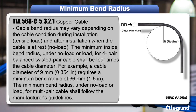Bend radius refers to the minimum radius that a cable can be allowed to bend without damaging the cable. All changes of direction on a cable run should be gradual and smooth whenever possible. For UTP cable, TIA requires a minimum inside bend radius of four times the diameter of the cable.